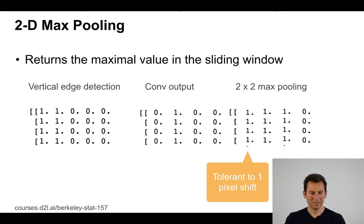So what you can see is in the previous example, if we have a vertical edge detector and perform convolution, the 2 by 2 max pooling becomes tolerant relative to one pixel shift. That's exactly what we wanted.